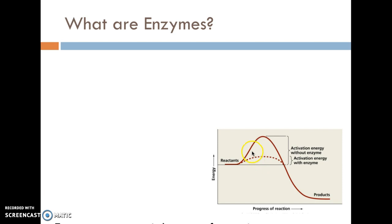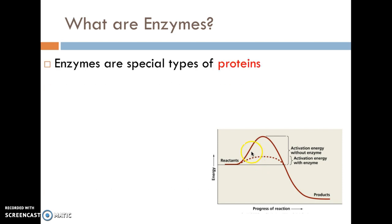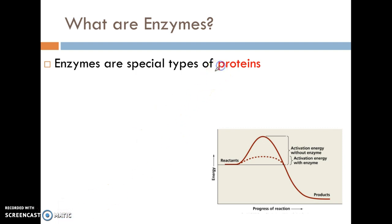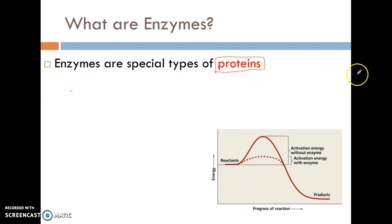First thing is, what are enzymes? Well, enzymes are going to be proteins. Proteins, as you know, are one specific type of biomolecule that we have covered so far. One specific example of a protein will be enzymes. Remember that proteins have lots and lots of different functions, yet one of them is going to be to serve as enzymes.